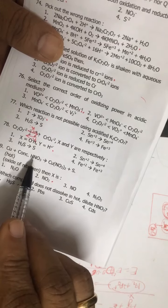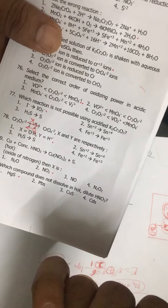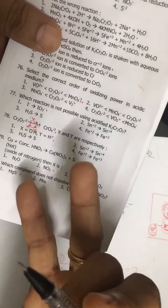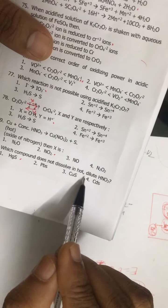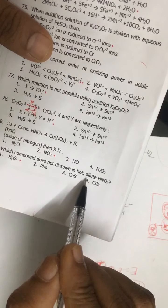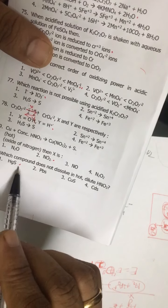Question number 79: copper plus concentrated HNO3 - it is NO2. With concentrated HNO3, copper, iron, zinc, every metal produces NO2. Which of the following does not dissolve in hot dilute HNO3? That again, you must remember - it is related to qualitative analysis. First option.